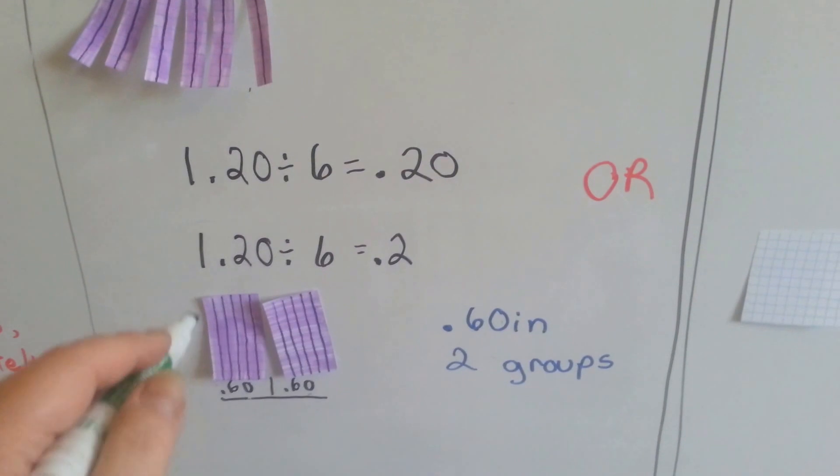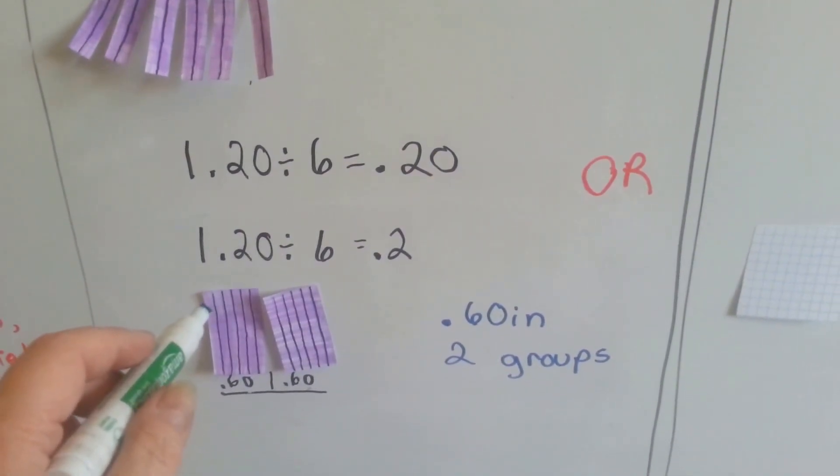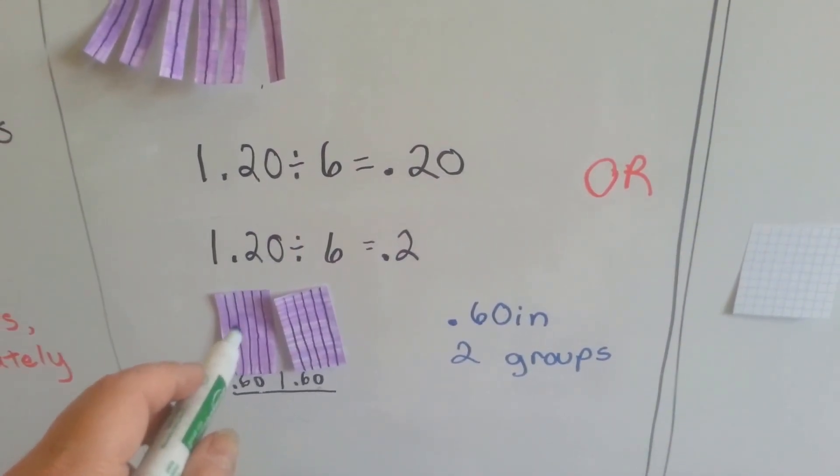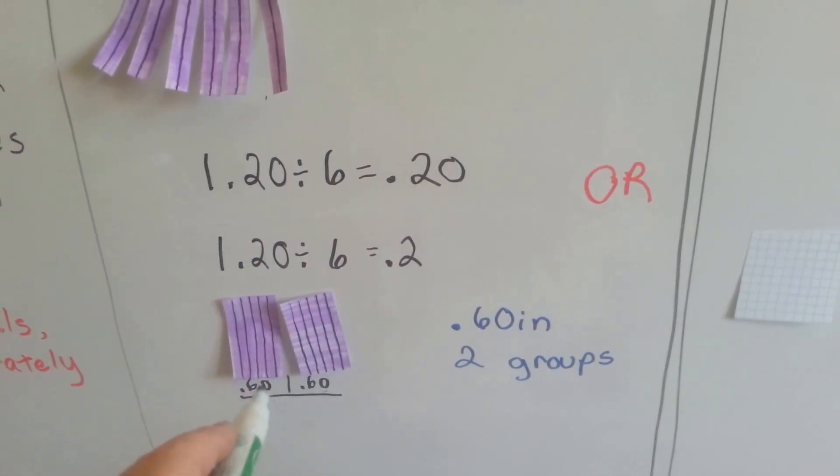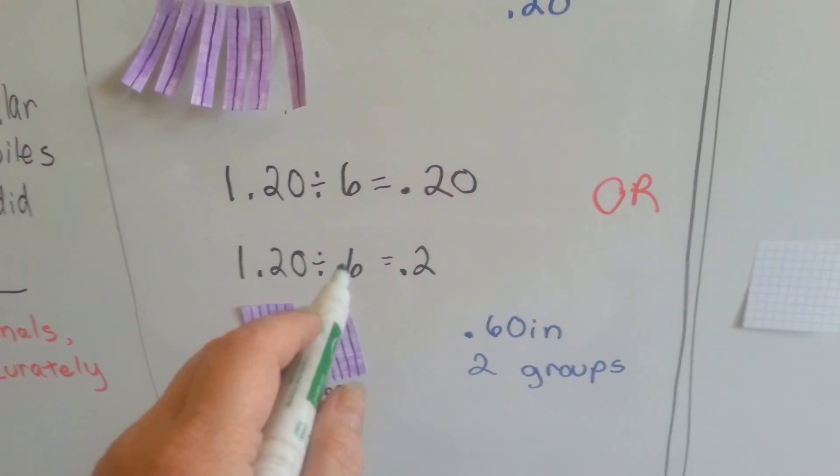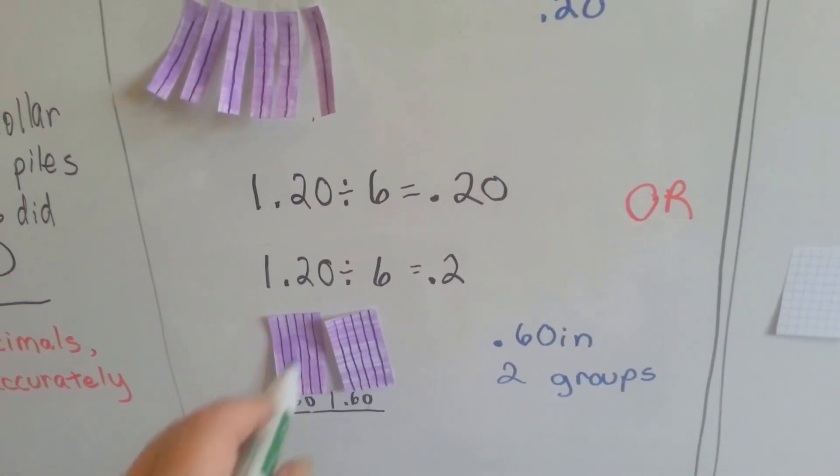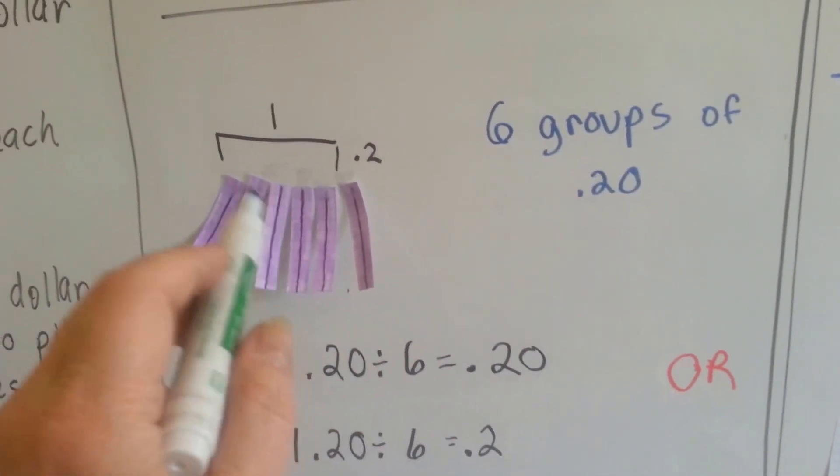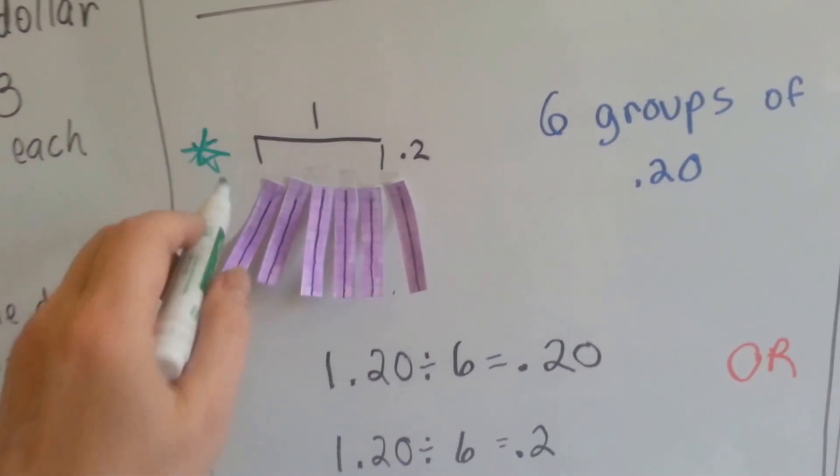Or is 1.20 divided by six this one, where there's two groups of 60 hundredths? See how there's no decimal point in the six? So it's not this one. It's into six groups, see? So if you said this one, you're right. It's very important.